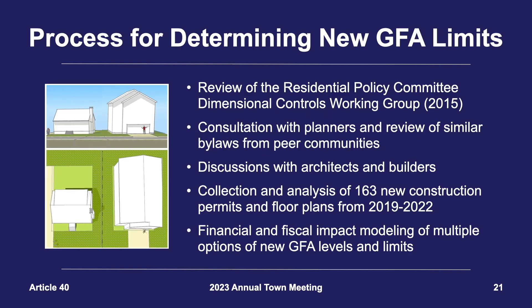The central change proposed under Article 40 is a reduction in the allowable GFA for new single-lot house development, derived through a systematic process that included a review of the previous GFA bylaw work from the Residential Policy Committee's Dimensional Controls Working Group, a review of Lexington's peer communities, discussions with architects and development teams, first-hand collection and analysis of 160 new construction permits and related floor plans for homes built in Lexington in the past three years, and evaluating potential policy options through a fiscal and financial lens.